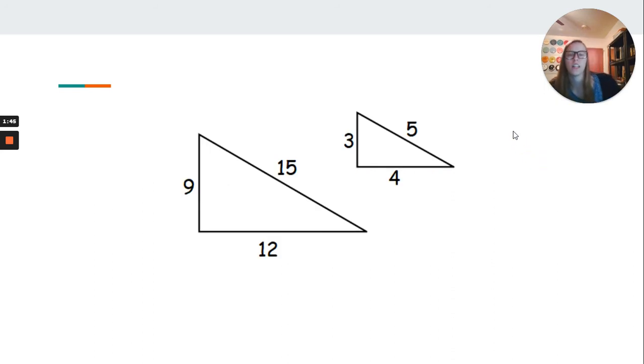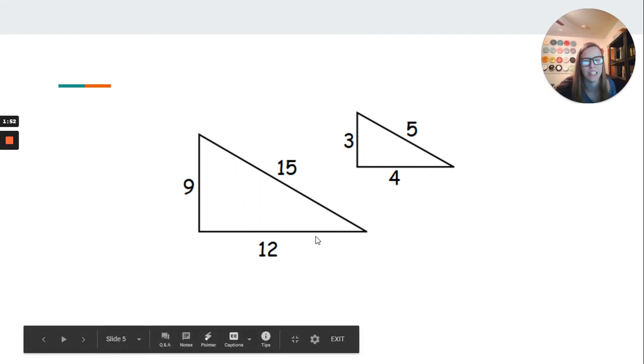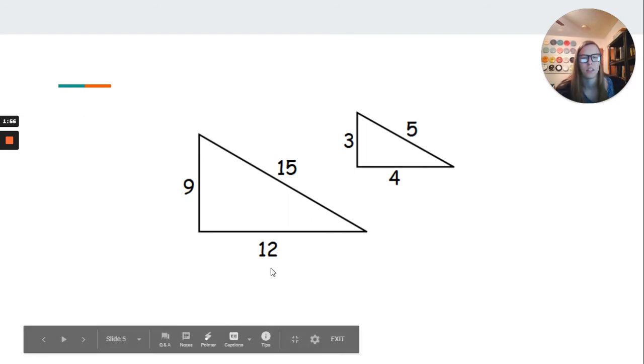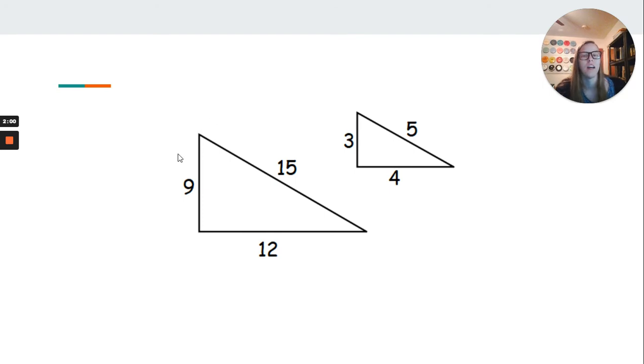So now we're going to look here. One of the things that you'll be asked to do on your assignment is to find what the missing length is. So let's say that we don't know what 15 is here. So we know if we put 12 over 4, we get 3. 9 over 3 is 3. So 5 times 3 gives us what? 15.